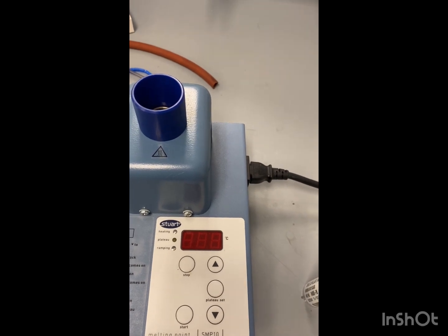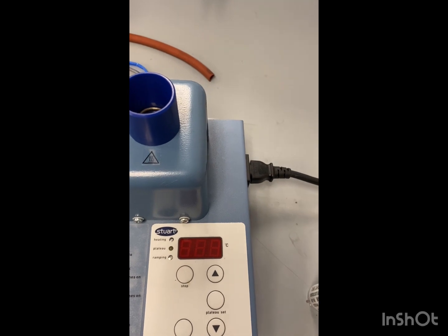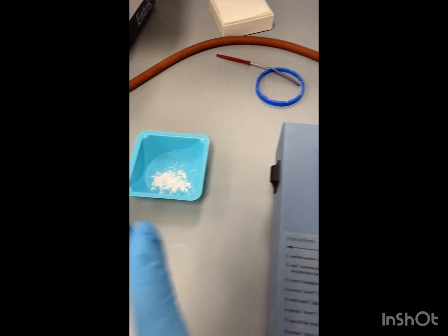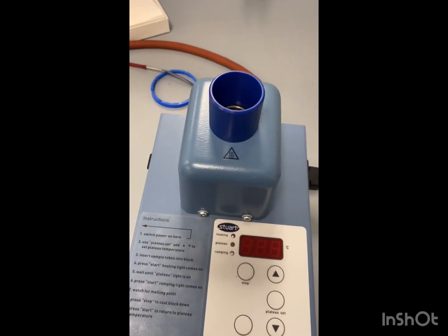So we want the range to be anywhere from 236 to 237 degrees Celsius because that's the reported range for meso-stilbene dibromide, which hopefully that is what we have performed here. So we're just going to confirm it with melting point.